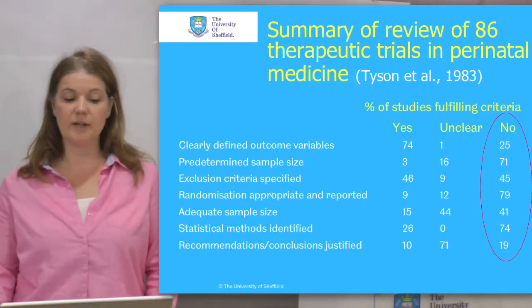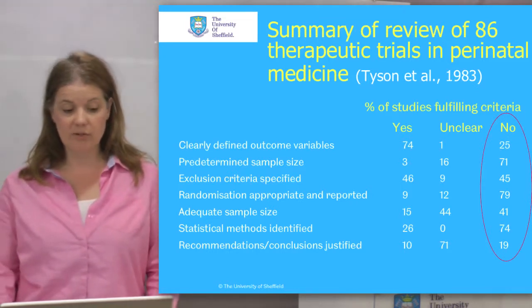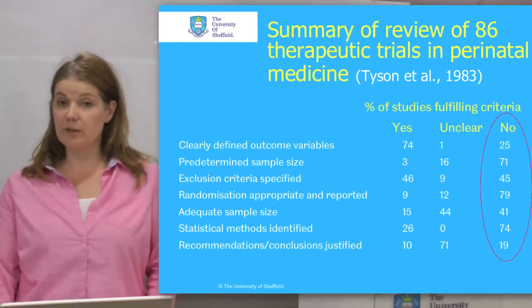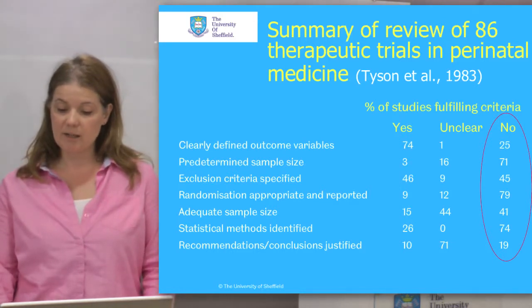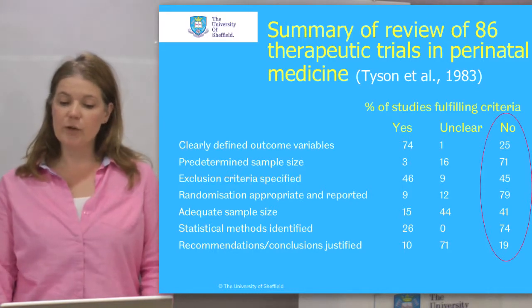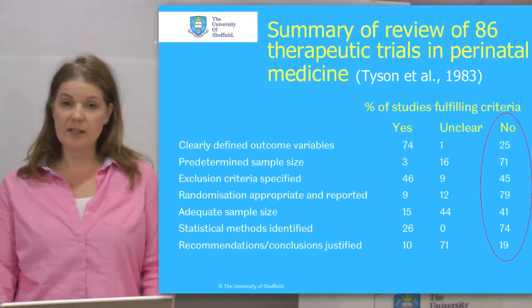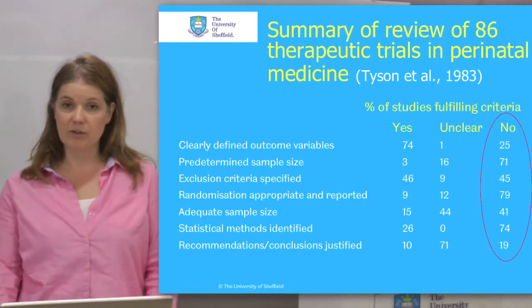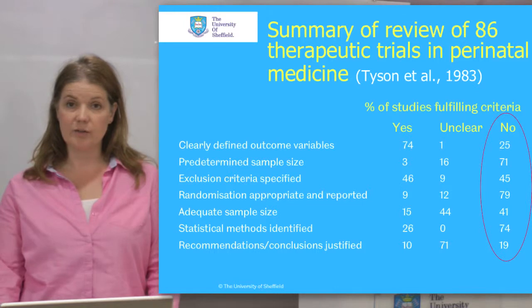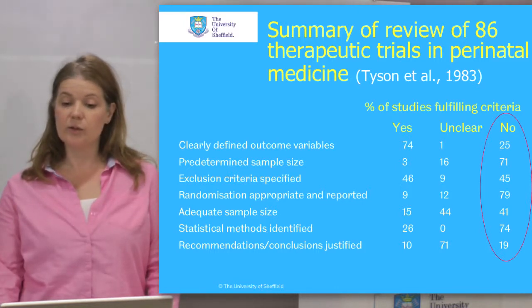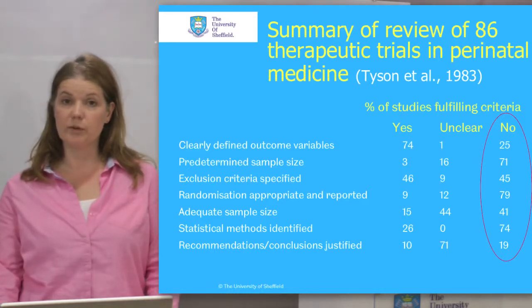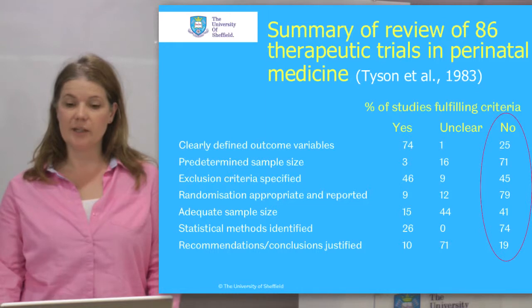They examined whether those studies had a clearly defined outcome, whether they had a predetermined sample size, and whether they used appropriate statistical methods. And you can see, highlighted in red, the 'no' column. In 25% of these studies they didn't have a clearly defined outcome variable. In 71% there was no predetermined sample size. In 74% of the studies the statistical methods weren't identified. Whilst this study is over 30 years old, these errors still creep in — and whilst we now have the CONSORT statement to guide reporting of randomized controlled trials, we still get these kinds of errors.